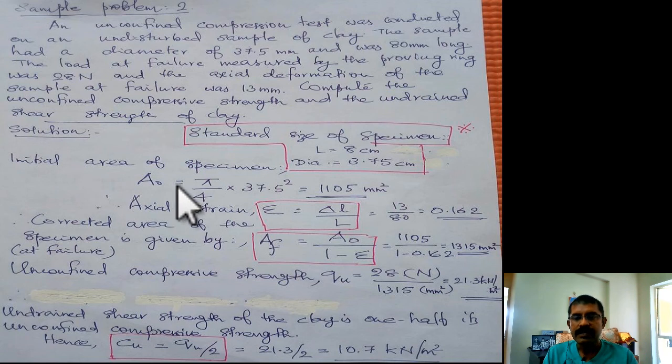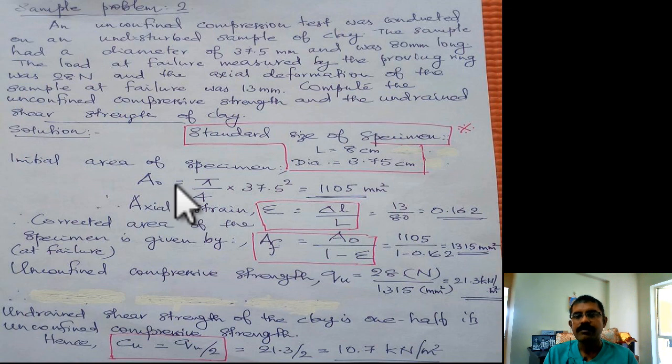The initial area of the specimen can be found out by A₀ = π/4 × diameter², that is 1105 millimeter square.